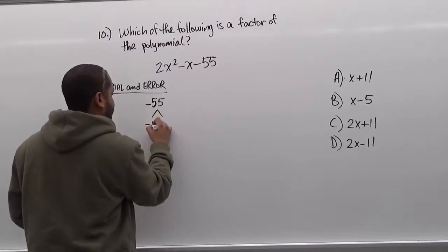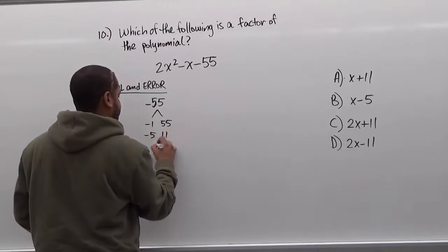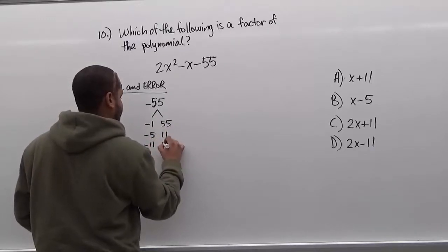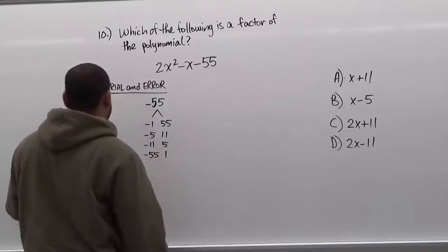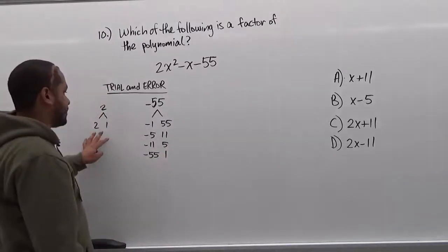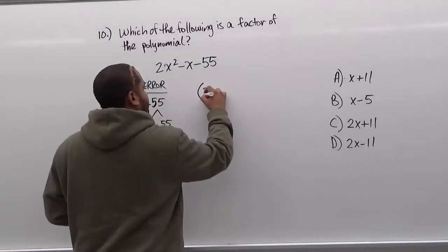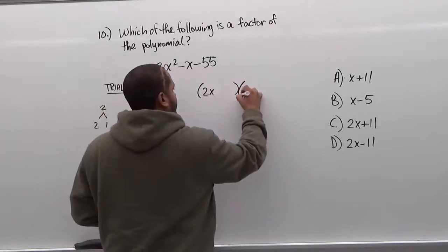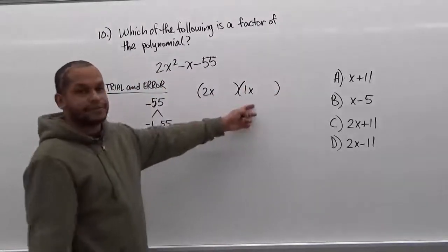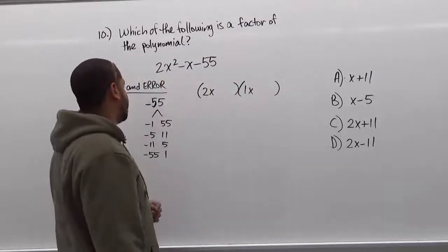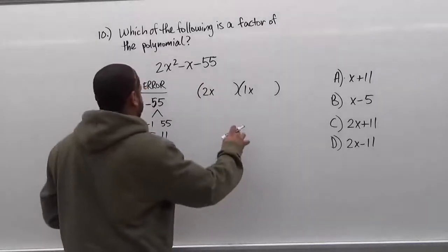And the factors of negative 55. To make negative 55, we have negative 1 and 55, negative 5 and 11, negative 11 and 5, and finally negative 55 and 1. Since we only have one set of factors for the 2, we're going to insert them in the parenthesis as 2x and 1x. Multiplying these two give us 2x squared, so we have our first term in order. What we have to worry about now is the sum of the middle two pairs.